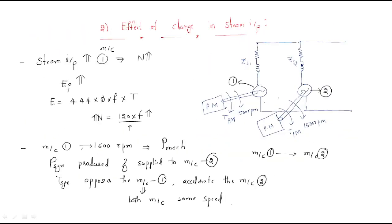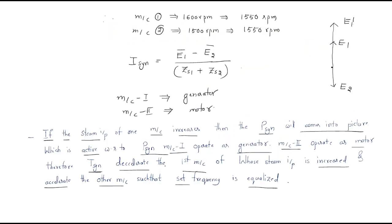To summarize: when two alternators are operated in parallel and one machine has more steam input, synchronizing power is generated and synchronizing torque is produced. That torque maintains constant speed for both machines. Machine one operates as a generator and machine two operates as a motor during this transient period.